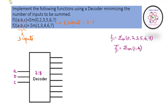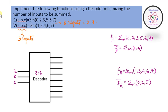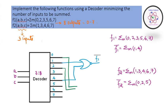F1-bar becomes summation m(1, 4) and F2-bar becomes summation m(0, 5). This gives us the minimum number of decimal notations to be combined together along with the NOR gate. This is a clear example of replacing a large OR gate group with a NOR gate by taking the complement of the function.